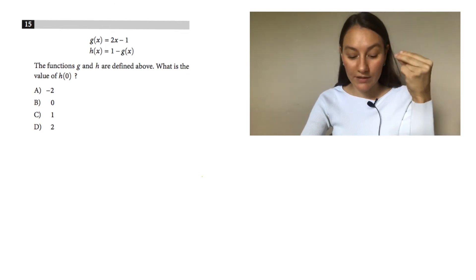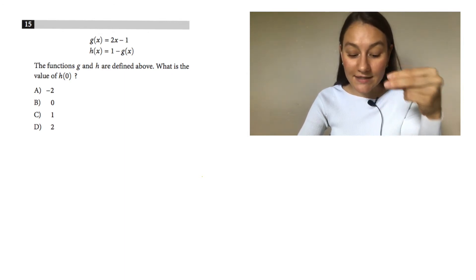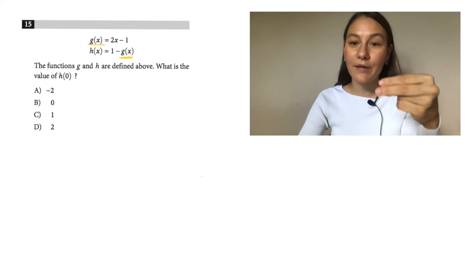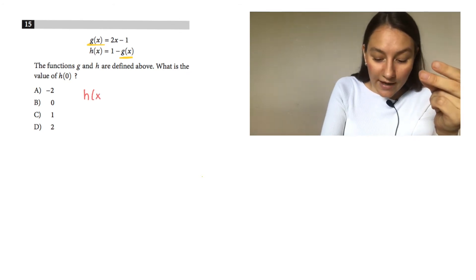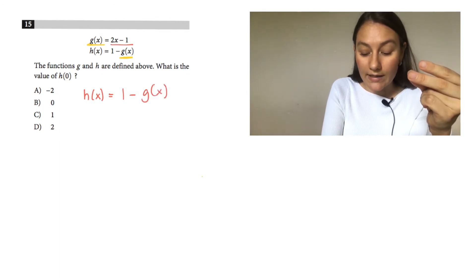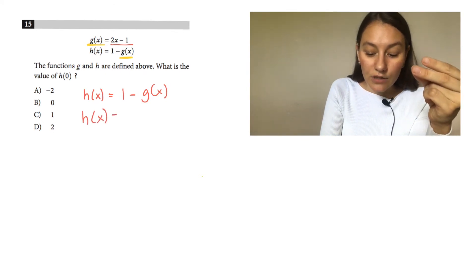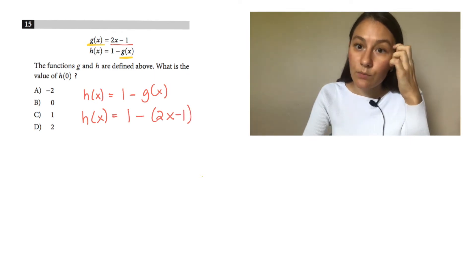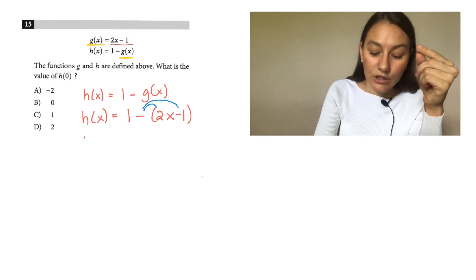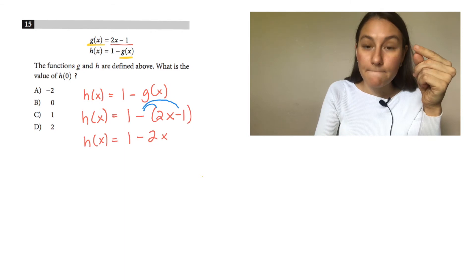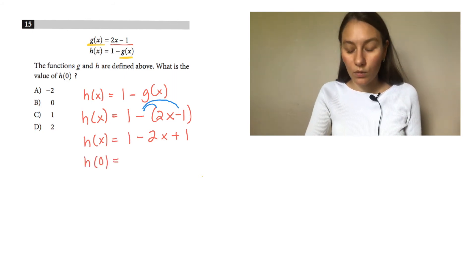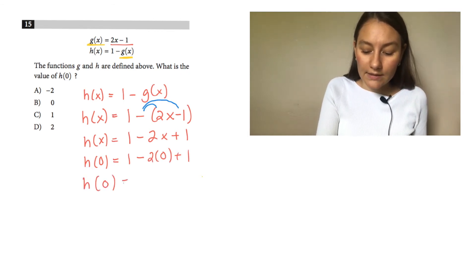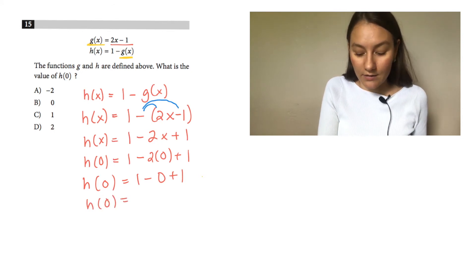This one's a little different — we have two functions. Anytime you have two, one is usually inside the other. Here h of x equals 1 minus g of x, and g of x equals 2x minus 1. So rewrite h of x as 1 minus parentheses 2x minus 1. Distributing the negative: h of x equals 1 minus 2x plus 1. Now plug in 0 for x: 1 minus 0 plus 1 equals 2. So h of 0 equals 2. The answer is D.